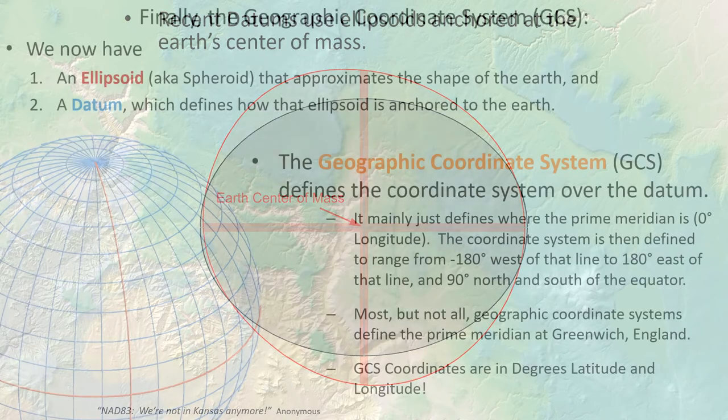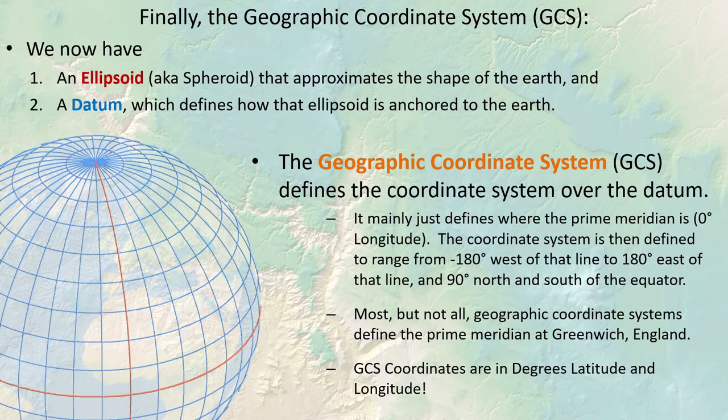This gets us to the geographic coordinate system, which is defined by several things: the ellipsoid or spheroid approximating the shape of the earth, plus the datum — how it's anchored to the earth — and then the actual latitude-longitude coordinate system overlaid on that datum. Defining this coordinate system mainly involves defining where the prime meridian is — the point of zero degrees longitude — and the system ranges from negative 180 to 180 degrees longitude and 90 degrees north and south.